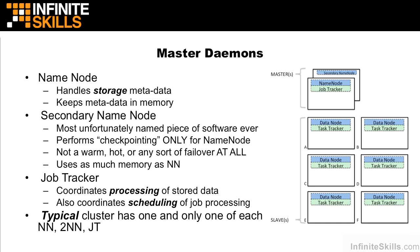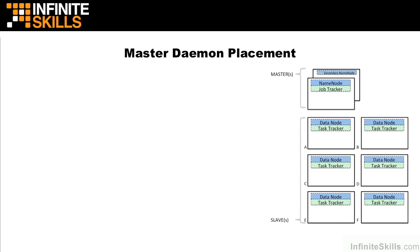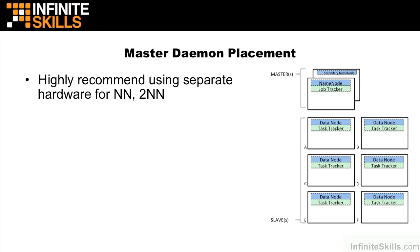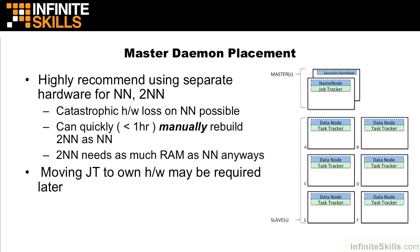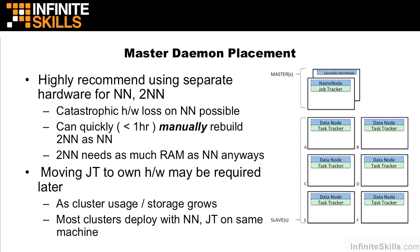When placing the master daemons, it's highly recommended to use separate hardware for the name node and the secondary name node. This is because a catastrophic hardware failure on the name node is possible, and we want to be able to quickly rebuild the secondary name node as the name node. That secondary machine is going to need as much RAM as the name node anyway, so buying a second machine gives you all the flexibility of redundant hardware, just in case you have a single failure on the name node machine. At some point, you might need to move your job tracker to its own hardware as the cluster grows. Most clusters deploy the name node and the job tracker on one single machine, leaving the secondary name node on a separate physical machine.